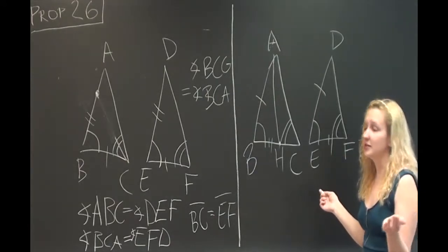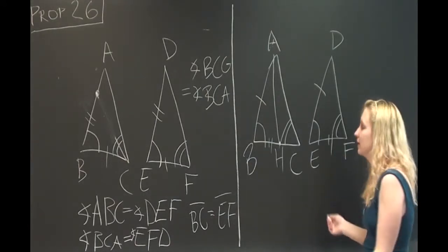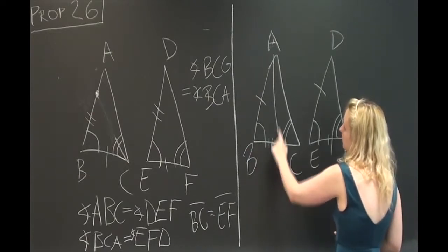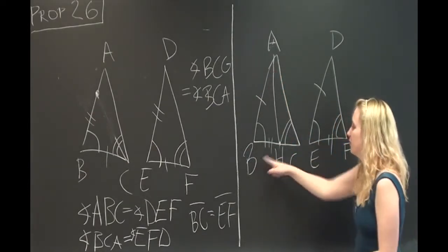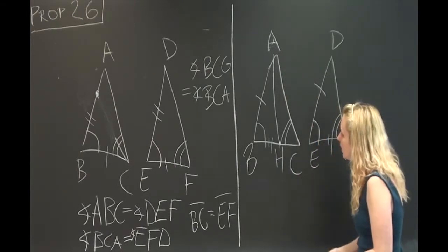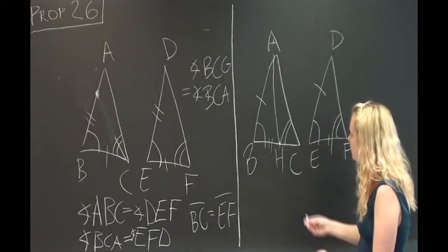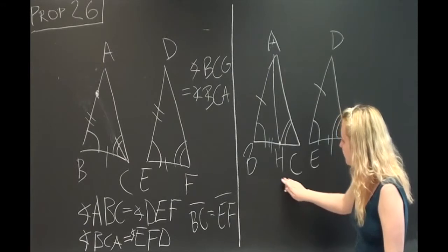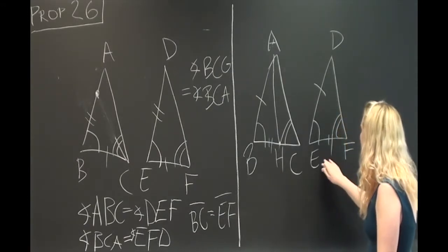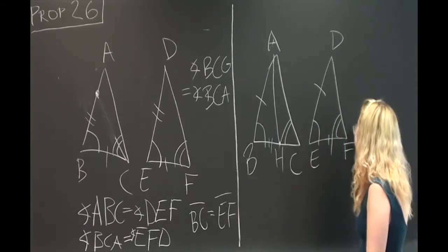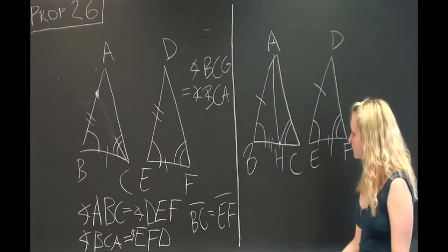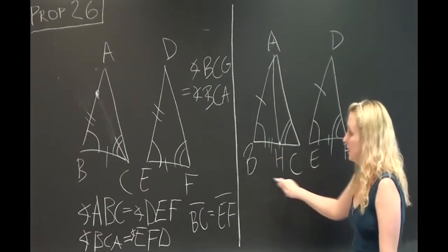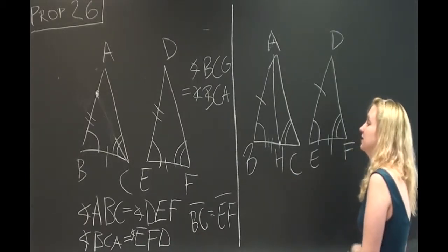However, this is impossible because as we learned in Proposition 16 in Book 1, the exterior angle BHA cannot be equal to the interior opposite angle BCA. And we know that, as before, BCA and EFA are equal, and now BHA and EFA are equal. So that BC and BH have to be equal, but as we just said, they can't be.